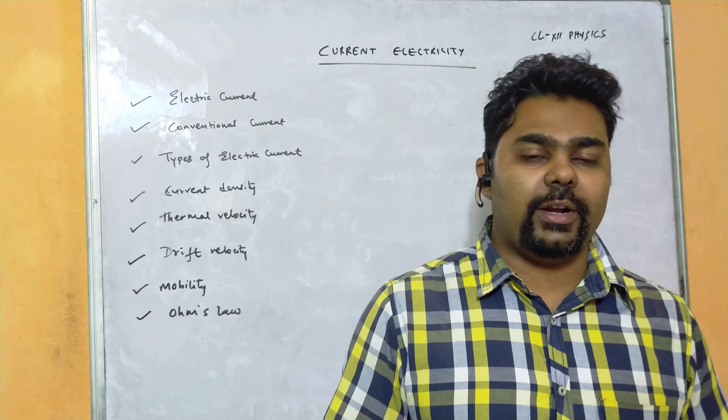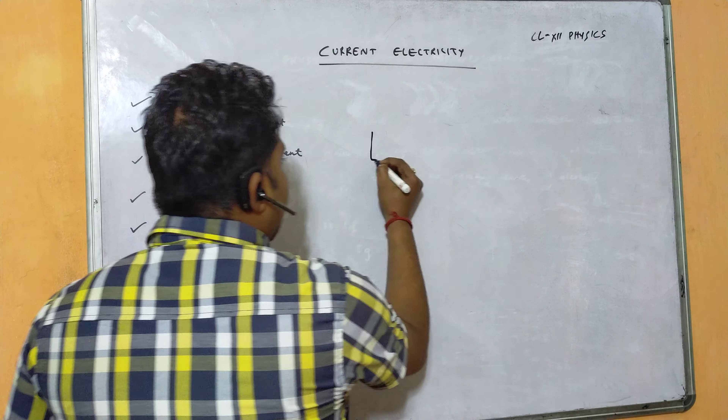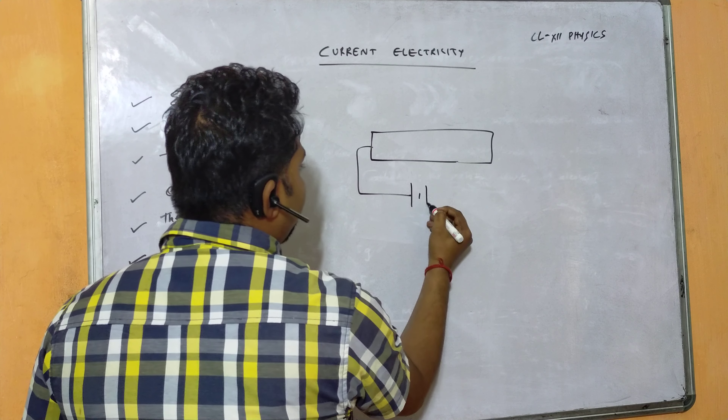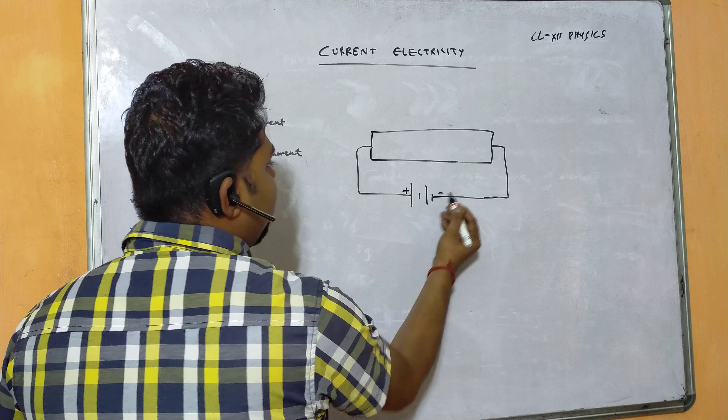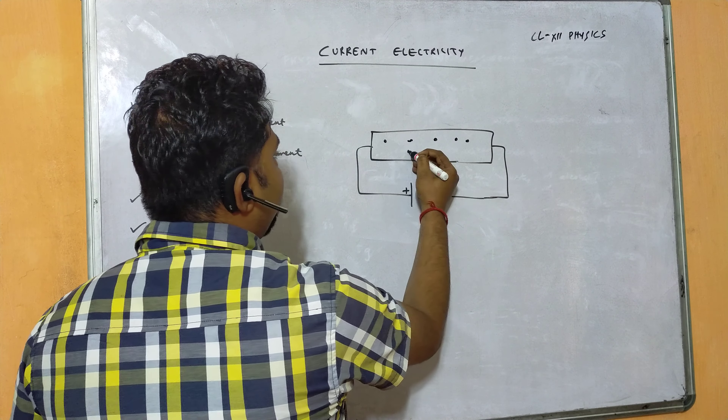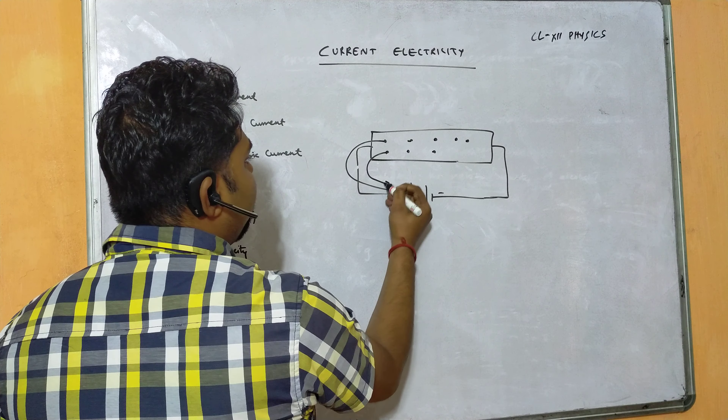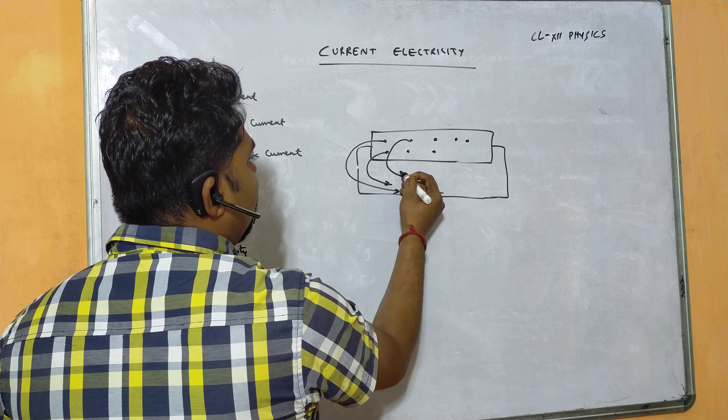Consider a conductor connected with a battery — positive terminal on one side, negative on the other. When connected, all the electrons move towards the positive terminal, and the positive ions move towards the negative terminal. The flow of electrons towards the positive terminal is called electronic current. Conventional current is opposite to the direction of electrons — that is, the flow of positive charge from positive to negative terminal.